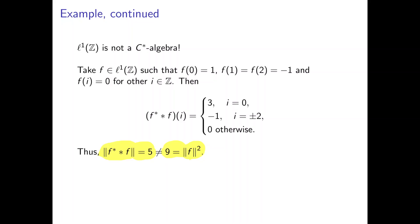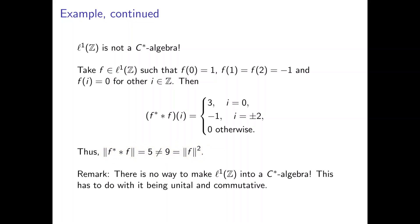This example is of particular interest because it is not merely a counterexample due to a bad choice of norm or star operator — there is actually no way to make l¹(ℤ) into a C-star algebra at all. This has to do with the algebra being unital and commutative, though we won't go into detail just yet. We may return to this example once we have the necessary machinery to prove that no choice of norm and star operator can make l¹(ℤ) a C-star algebra.